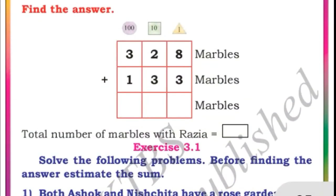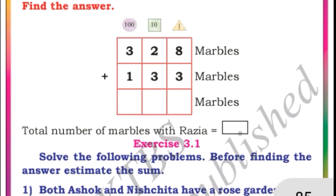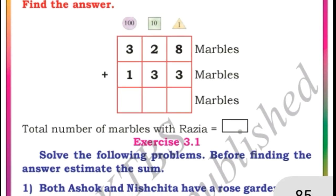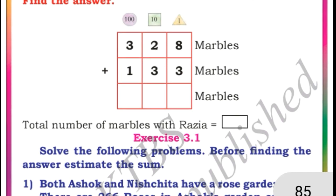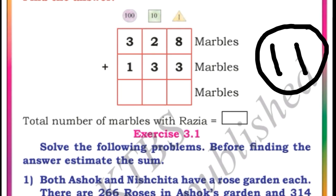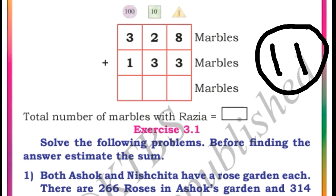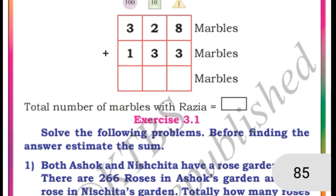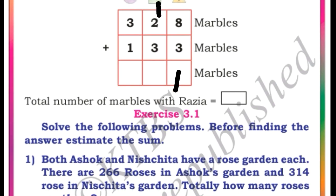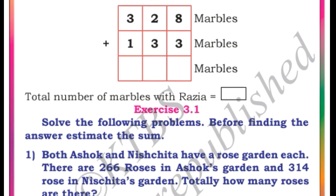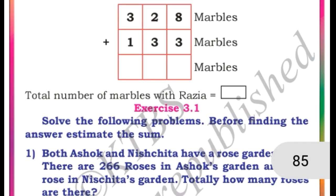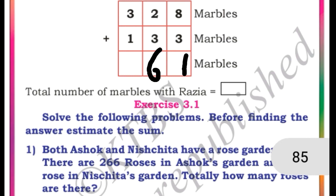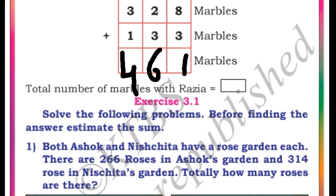Next, here is one more answer to find. 8 plus 3: after 8 let us count 3 — 9, 10, 11. If we get 2 digits by adding the ones place, write the ones digit in the ones place and carry 1 to the tens place. So we write 1 and carry 1. Then 1 plus 2 is 3, 3 plus 3 is 6 — and 3 plus 1 is 4. So 461 is the answer.